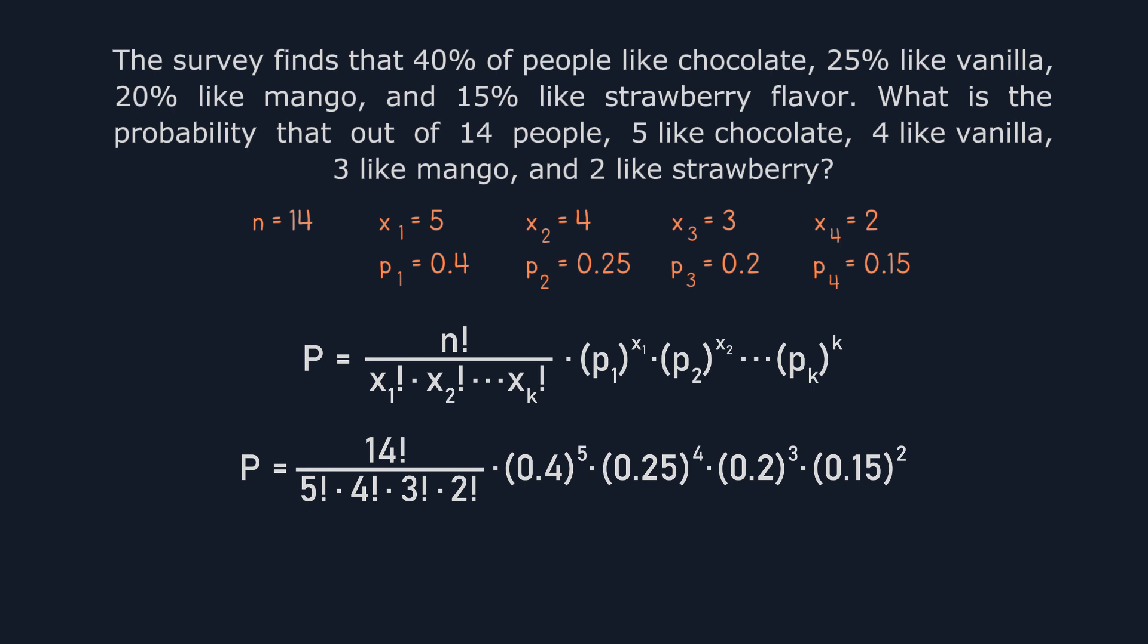Now, calculating everything together will give us 0.0181. Therefore, the probability that out of 14 people, 5 like chocolate, 4 like vanilla, 3 like mango, and 2 like strawberry is about 1.81%.